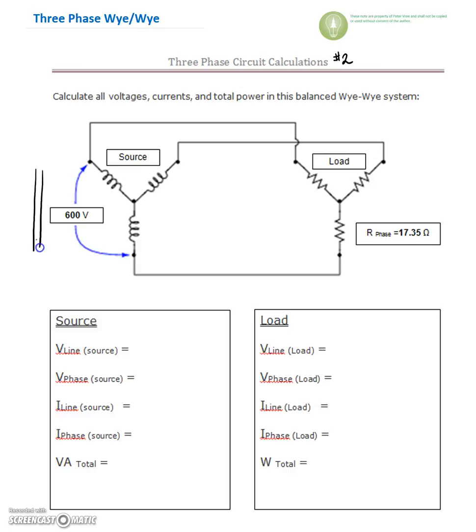Again, just so you don't get screwed up here, we're not sure what the primary is here. This is the secondary of our transformer, and it looks like we've been given a voltage of 600 volts, and we've been given a resistance on the phase of 17.35 ohms.